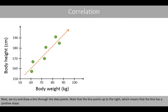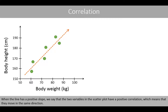Next, we try and draw a line through the data points. Note that the line points up to the right, which means that the line has a positive slope. When the line has a positive slope, we say that the two variables in the scatter plot have a positive correlation, which means that they move in the same direction.